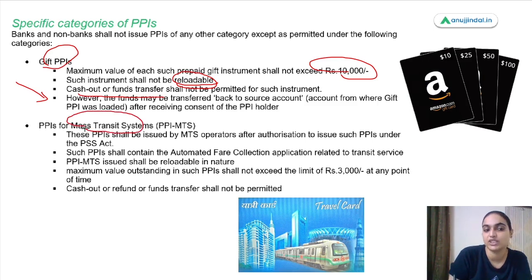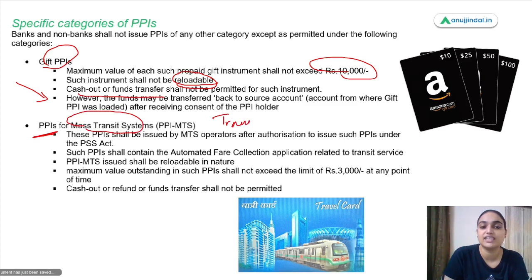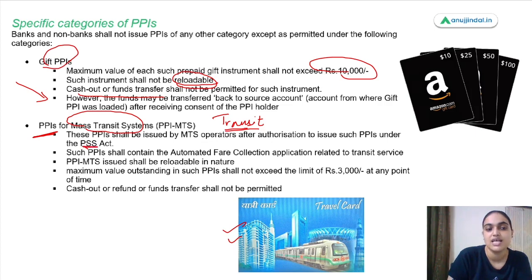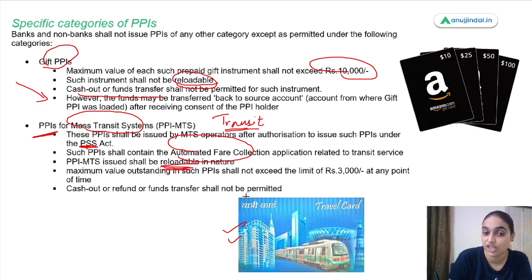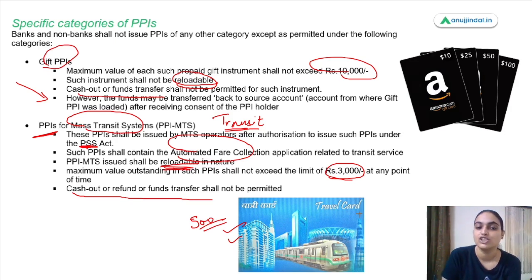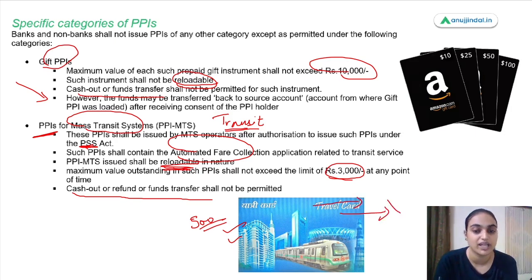There are also mass transit system PPIs — for transit facilities like railways and metro, a PPI payment instrument such as a Metro card can be issued. These PPIs shall be issued by mass transit systems after authorization under the Payment and Settlement Systems Act, and shall obtain a Common Automated Fare Collection application for transit service. They are reloadable in nature — you can recharge your Metro card. Maximum value shall not exceed 3,000 at any point of time. Cash-out, refund, or fund transfer is not permitted — you cannot refund or transfer that balance.